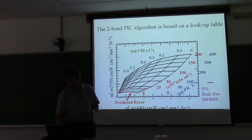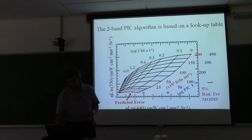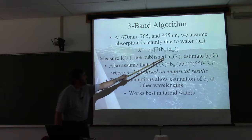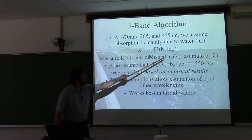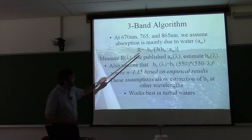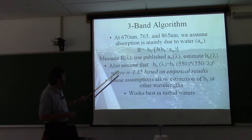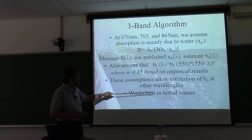How do we convert coccolith concentration to PIC? The three-band algorithm uses those three bands. We basically assume that the absorption is mainly due to water, which we know, and then we measure the reflectance. We use the published values of water absorption to estimate what the backscattering should be. We assume this wavelength dependence relationship, which goes back to the Voss paper, using a 1.35 factor. These assumptions allow us to figure out the backscattering at other wavelengths.